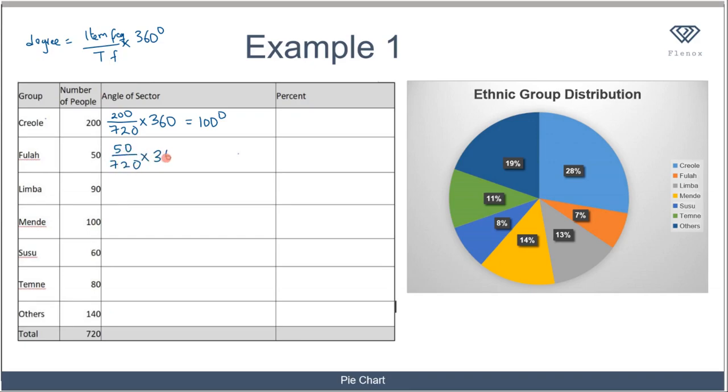Here you have 90 over 720 times 360, which gives us 45 degrees. Then 100 over 720 times 360 gives us 50 degrees. When you solve for the rest, you get angles of 30 degrees, 40 degrees, and 70 degrees.